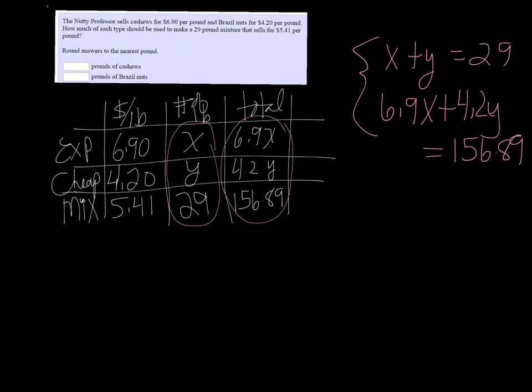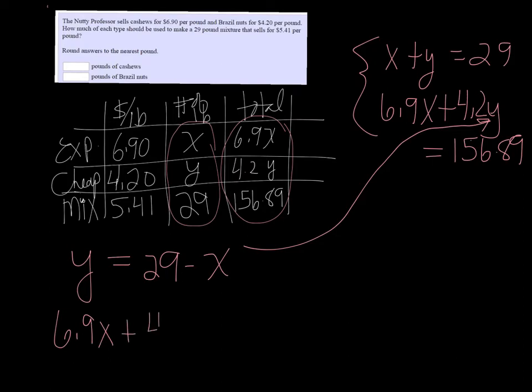If I take the top equation and I solve it for Y, then I get Y equals 29 minus X. If I plug that in for the Y here, I get 6.9X plus 4.2 times 29 minus X equals 156.89.